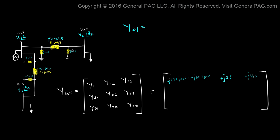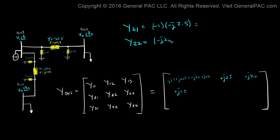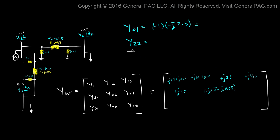Y21 is the admittance from bus 2 to bus 1 with the negative 1 factor, giving positive J2.5. Y22 equals the sum of all admittances connected to bus 2: the line admittance negative J2.5 plus the shunt admittance J0.05. Y23 represents the admittance from bus 2 to bus 3, but since there is no admittance connecting those two buses, Y23 equals 0.